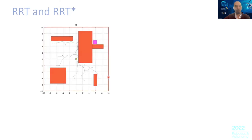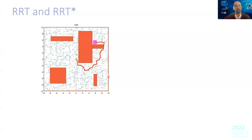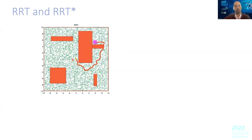You then search over this graph — this tree, actually. It's an example that created a tree rooted at the beginning. You want to go to the end; the magenta point is the goal. After a while, you find a path. It turns out that this is probabilistically complete, meaning that you will find a path if one exists.